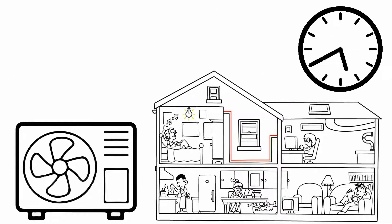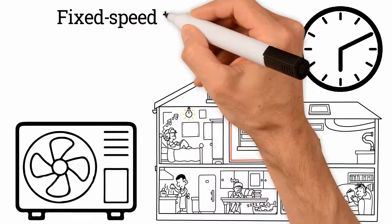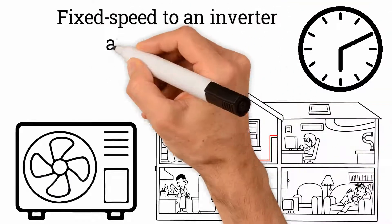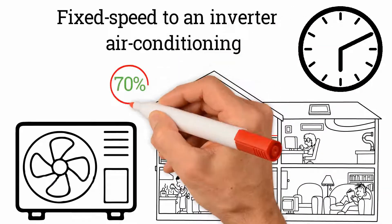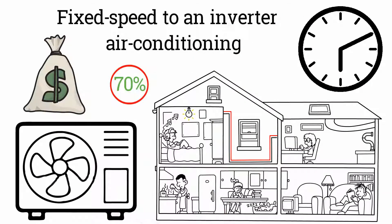After 3 hours of work, your air conditioning system will go from being an old fixed speed to an inverter air conditioning unit that saves over 70% power, saving you lots of money.